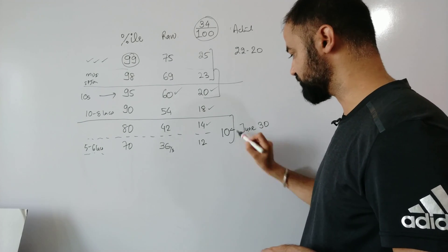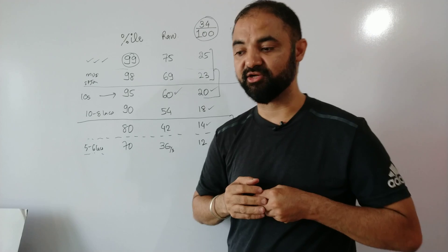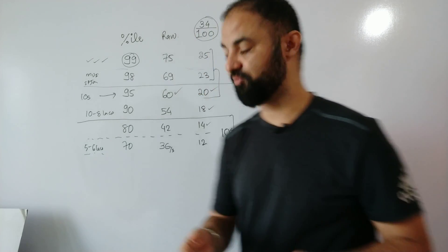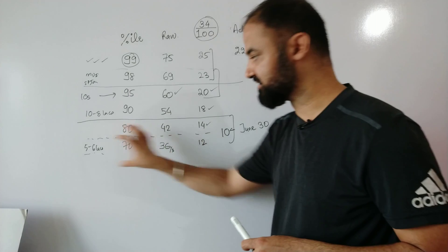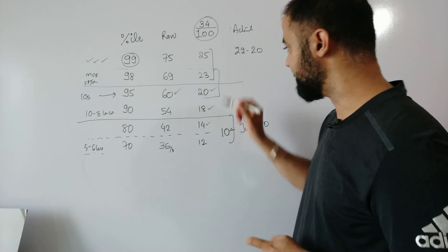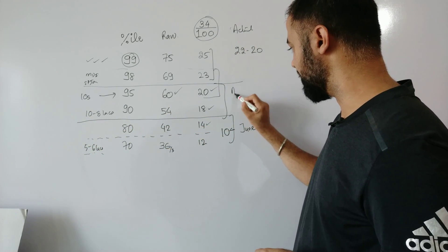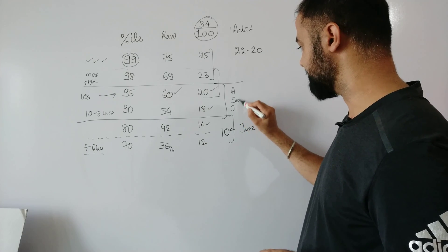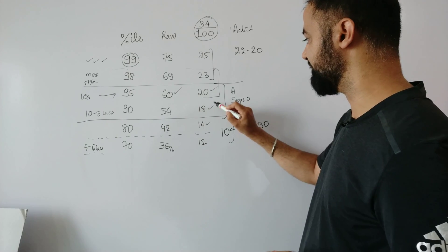Your target is to get 10 questions correct. If you get 10 questions correct, you are in line for all the IIMs. April, May, June, next three months, complete the basics, you'll get 10 questions correct. Then we move the target.